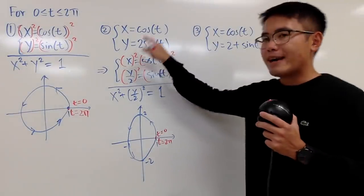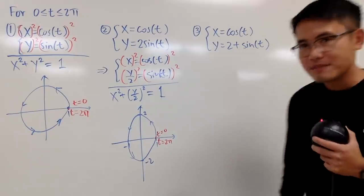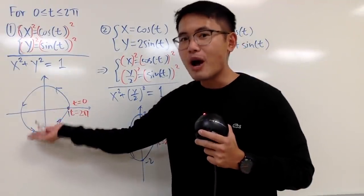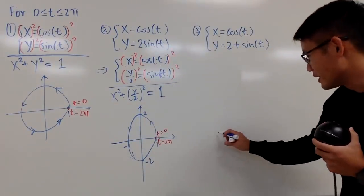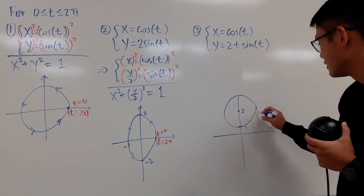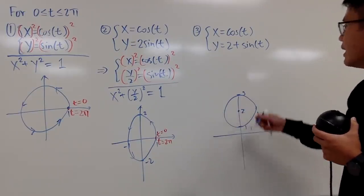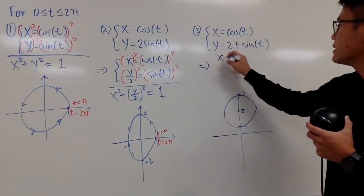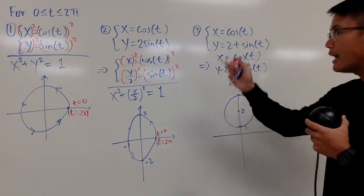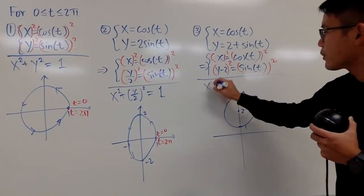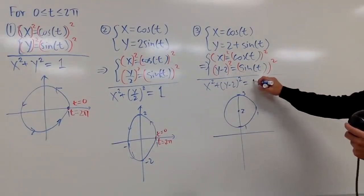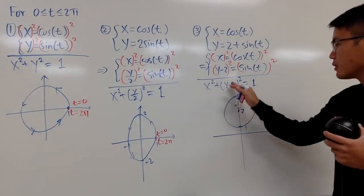Lastly, instead of multiplying sin(t) by 2, we add 2: x = cos(t) and y = sin(t) + 2. Adding 2 to the y values shifts the circle up by 2. Subtracting 2 from both sides gives y - 2 = sin(t). Squaring and adding: x² + (y - 2)² = cos²(t) + sin²(t) = 1. This is the circle with radius 1 centered at (0, 2), so the top is at y = 3 and the bottom at y = -1... wait, y = 1.